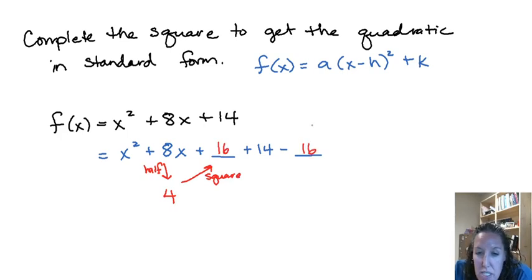We're going to add it and then we're going to subtract it, and then we're going to factor those first three terms. So x squared plus 8x plus 16 will always factor to x plus the number that we had our half on, quantity squared.